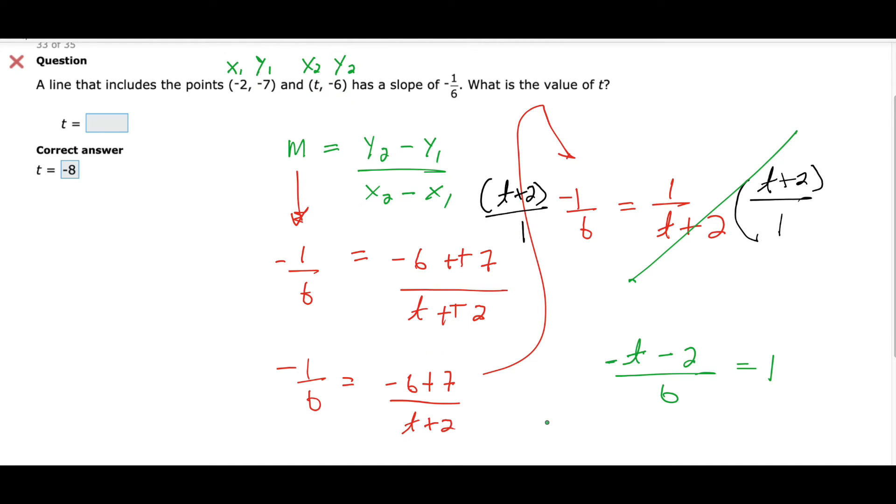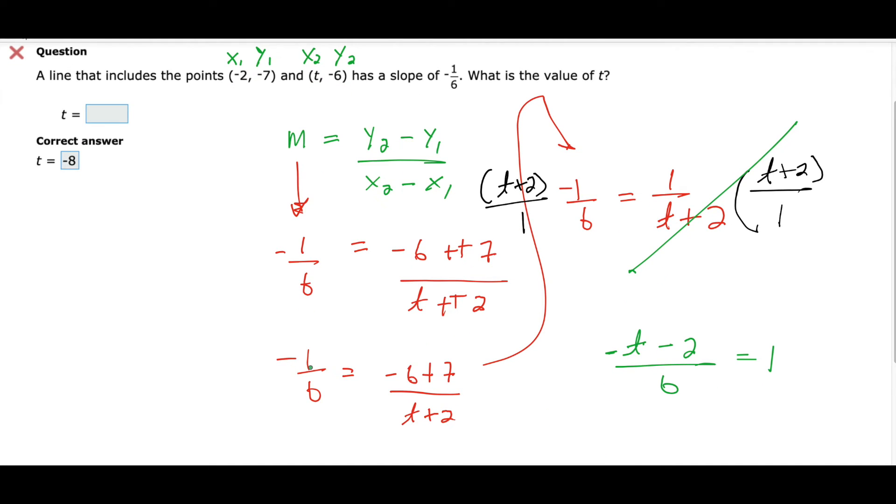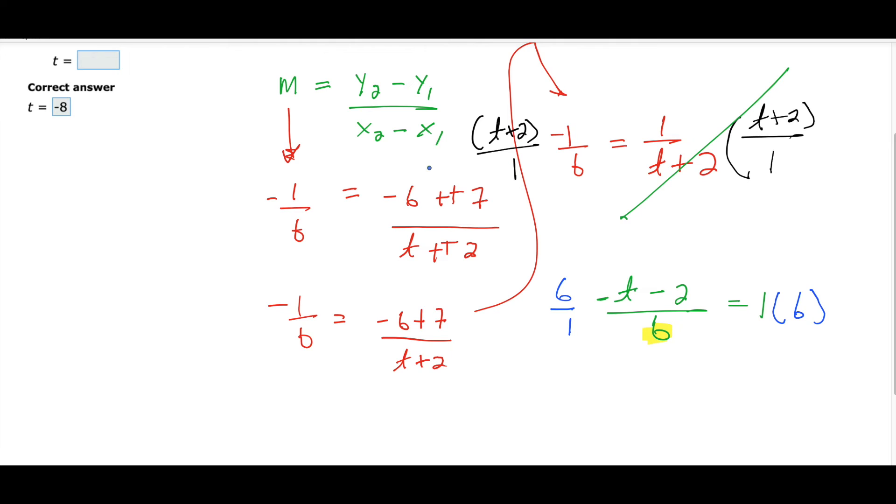Now, what do you do from there? You want to kill your denominator. That's what's kind of—Is that a b or a 6? That's a 6. Okay, so then I times 6 on both sides. Alright, so 6 over 1 times 6. So then I get -t minus 2 equals 6. Then I add 2.